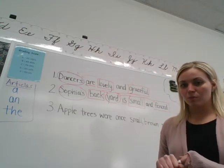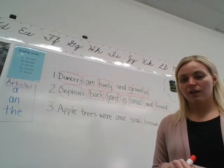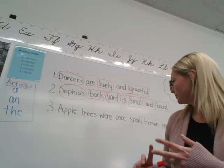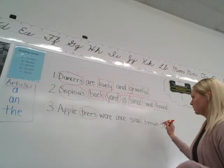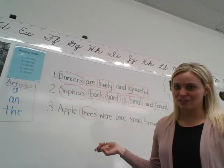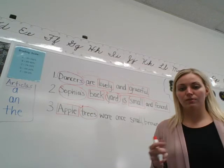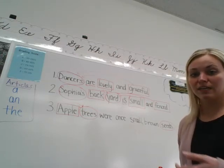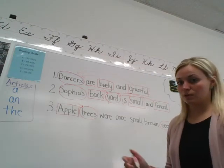Number three: 'Apple trees were once small brown seeds.' We want to circle our nouns — pause me and circle them. You should have circled 'trees' and 'seeds.' Trees are things and seeds are things. 'Apple' is trying to trick you because it's an apple tree, but apple is describing the tree, so apple would be an adjective. With our verbs, they're trying to trick you again. Trees can't 'small,' trees can't 'brown,' trees can't 'seeds' — so they 'were.' They were once small brown seeds, so 'were' is our verb in this sentence.